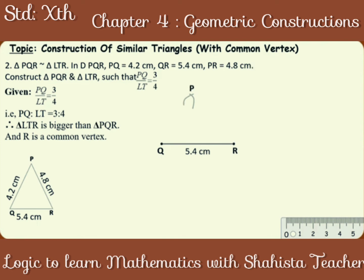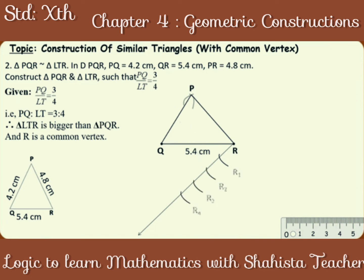Draw an angle, preferably an acute angle from point R, since R is the common point in both the triangles. Draw 4 arcs of equal measurement from point R, since the ratio is 3 is to 4 and 4 represents the bigger triangle. Name them as R1, R2, R3 and R4. Join R3 with point Q, since the ratio is 3 is to 4 and 3 represents the given triangle. Now, draw a line parallel to segment QR3. Extend segment QR such that the parallel line meets the line QR. This point is T. Now, draw a line parallel to side PQ from point T. Extend side PR such that this parallel line meets segment PR. Mark this point L. Note: to draw parallel lines, you can use the property of corresponding angles.